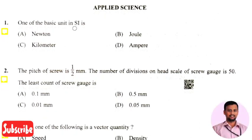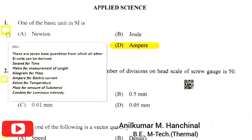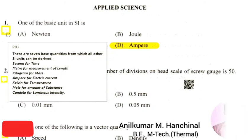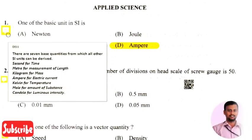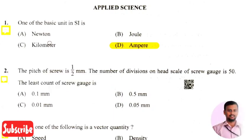The first question in the Applied Science section asks about a basic unit in SI. The right answer is option 4, that is Ampere. There are seven basic quantities from which all other SI units are derived: second for time, meter for length, kilogram for mass, ampere for current, Kelvin for temperature, mole for amount of substance, and candela for luminous intensity. Among the given options, ampere is a basic quantity, so that is the right answer.